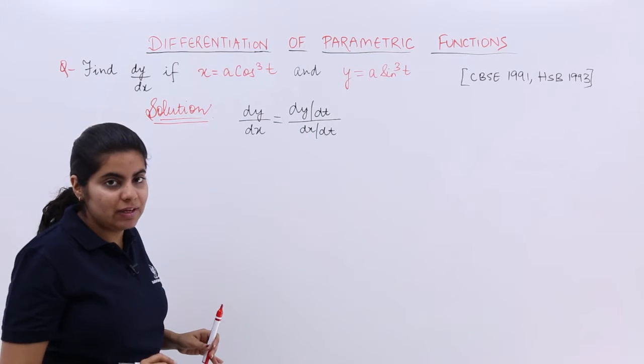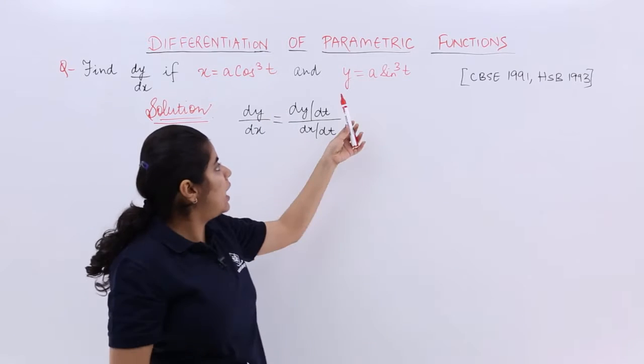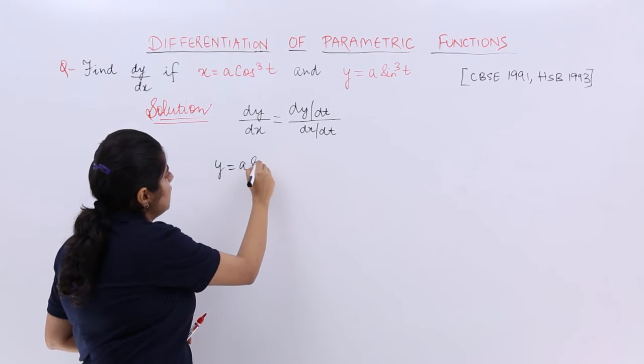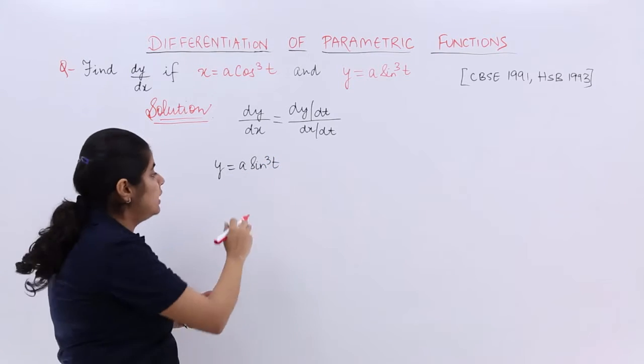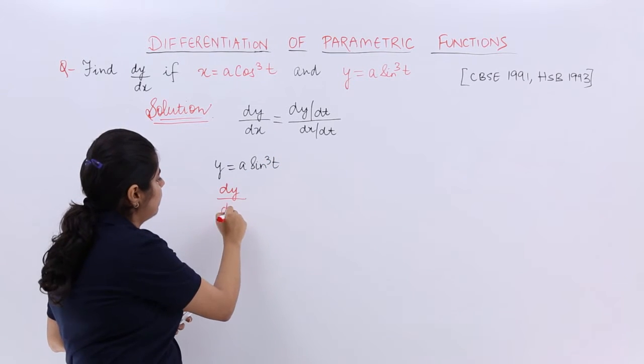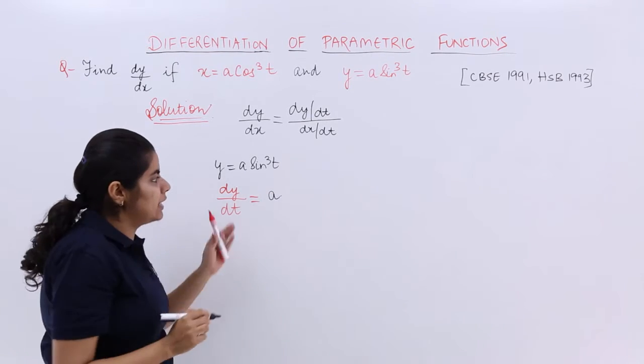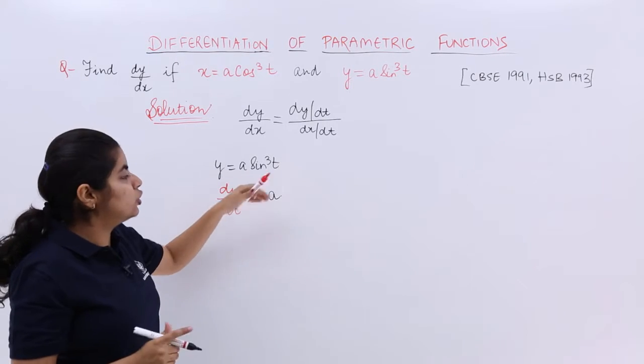Now what is dy/dt? When y equals a sin cubed t, I write here y equals a sin cubed t. My dy/dt is what? I know that a is a constant, cannot disturb it, let's keep it as it is. Sin cubed t, sin cubed t.